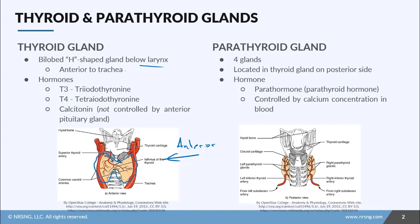The thyroid gland secretes several different hormones. It secretes T3 and T4 — T3 is triiodothyronine and T4 is tetraiodothyronine. It also secretes another hormone called calcitonin. It's important to note that calcitonin is not controlled by the anterior pituitary gland — it's actually controlled by calcium in the blood.